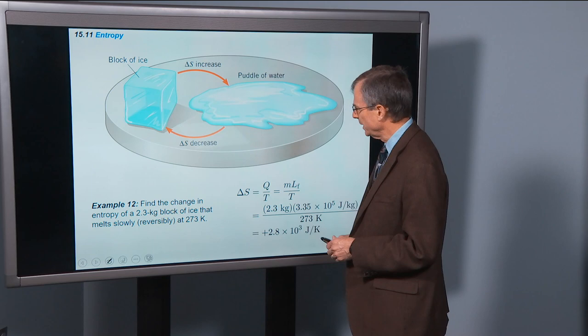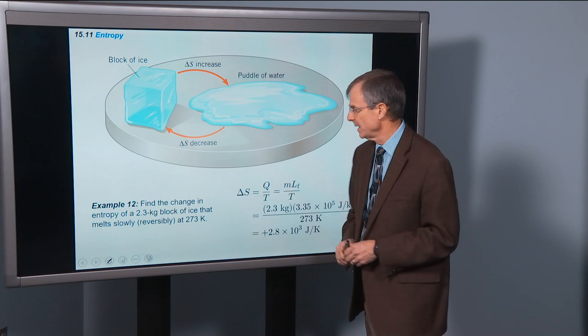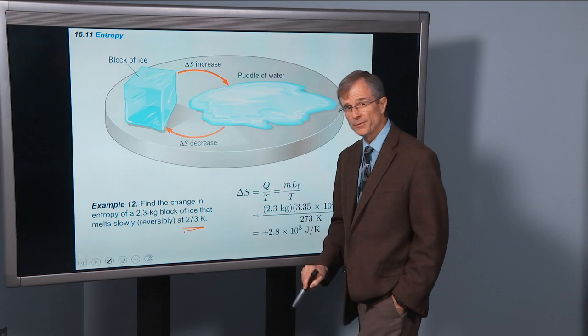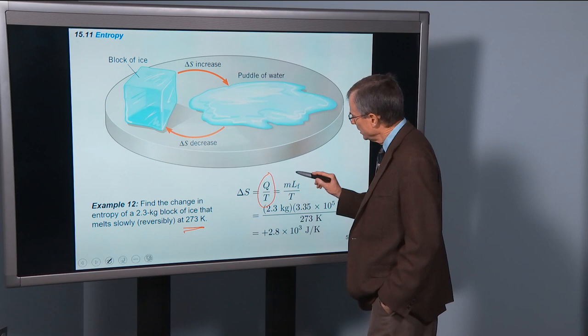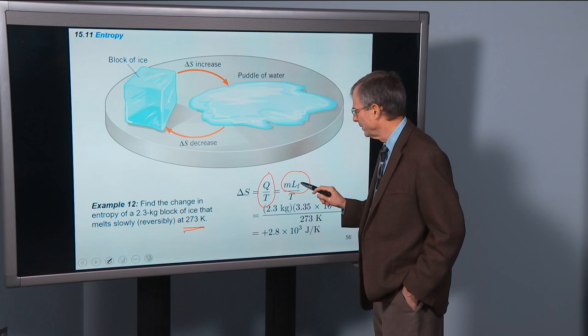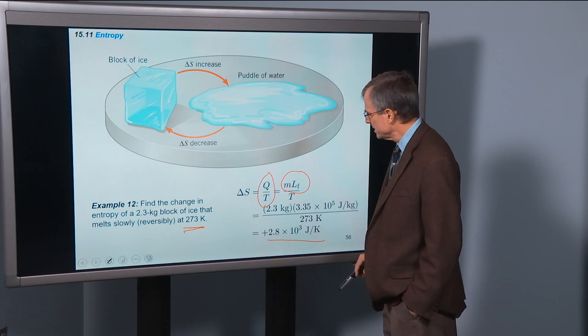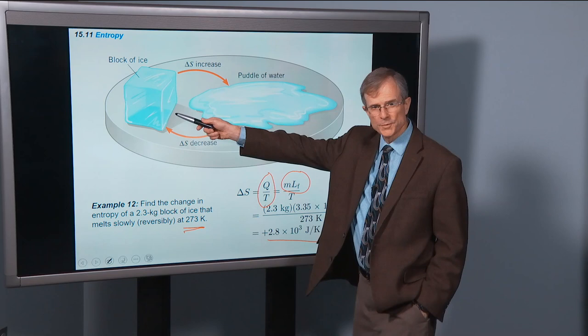Another quick example: find the change in entropy of a 2.3 kg block of ice that melts slowly, reversibly, at 273 K. So the change in entropy of the ice as it melts at a constant temperature. So this is a reversible process. It's the heat added to the ice, which will be the mass of the ice times the latent heat of fusion. You can go back and look that up a couple of chapters ago. Mass times latent heat of fusion divided by the temperature. That's the increase in the entropy of the ice as it goes from this ordered state to this disordered state.